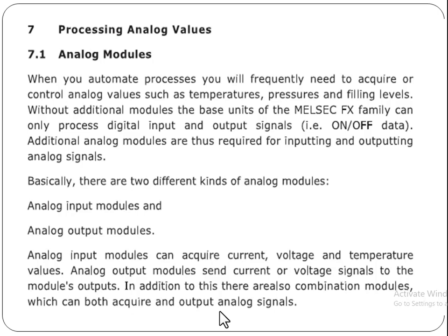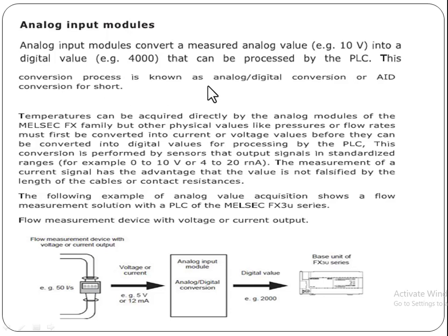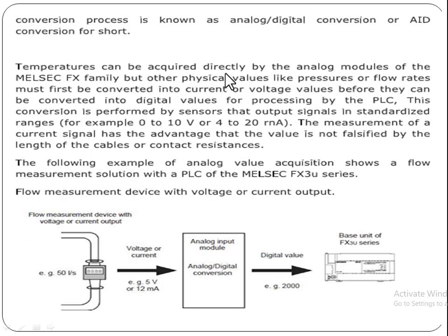Analog input modules convert a measured analog value — for example, 10 volts — into a digital value, for example 4000, that can be processed by the PLC. This conversion process is known as analog-to-digital conversion, or A/D conversion for short. Temperatures can be acquired directly by the analog modules of the Mitsubishi FX family.